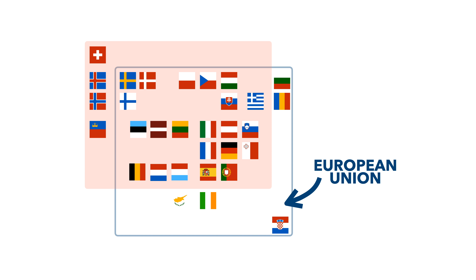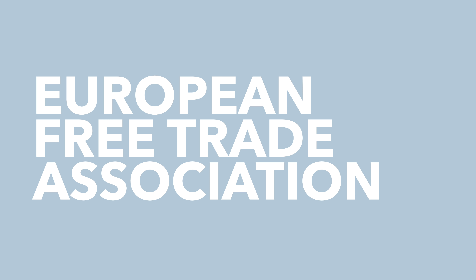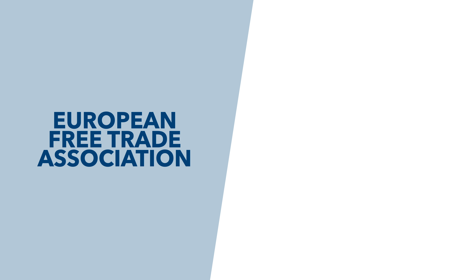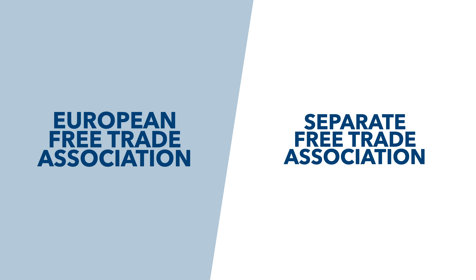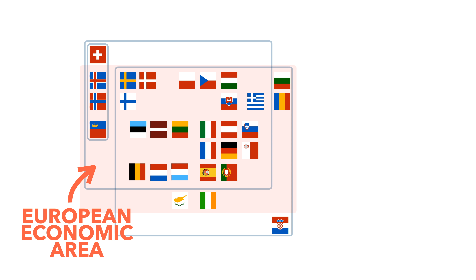Let's circle back to Switzerland, Iceland, Norway, and Liechtenstein. They're in Schengen, but not in the EU. However, they're also in the European Free Trade Association. In its simplest terms, EFTA refers to a separate free trade area that participates in the European Single Market through the European Economic Area. In effect, the EEA is the EU Single Market extended to allow access to EFTA members, except Switzerland.